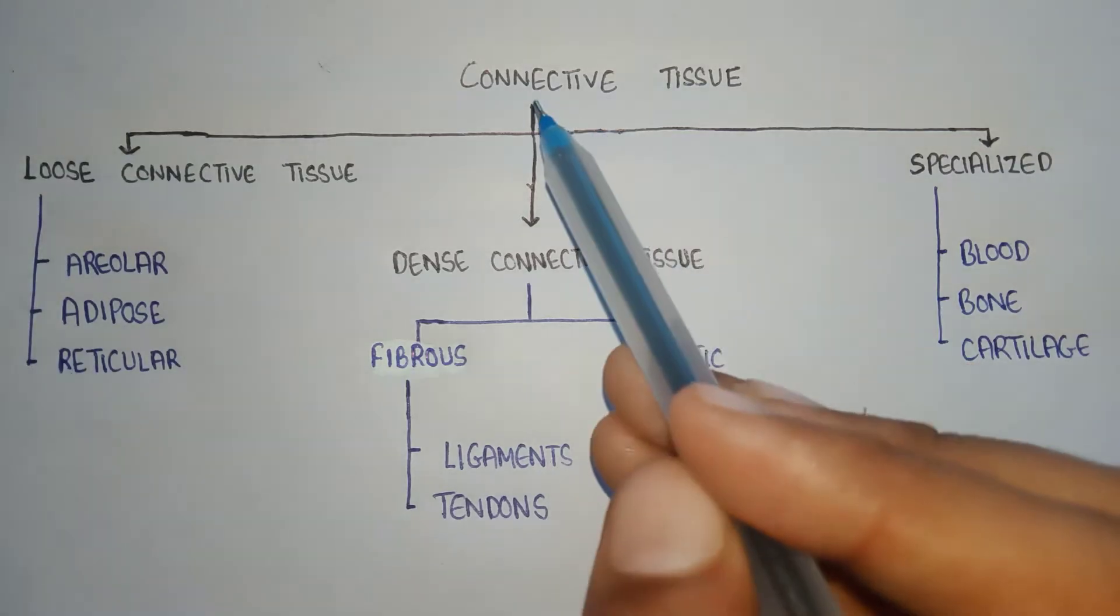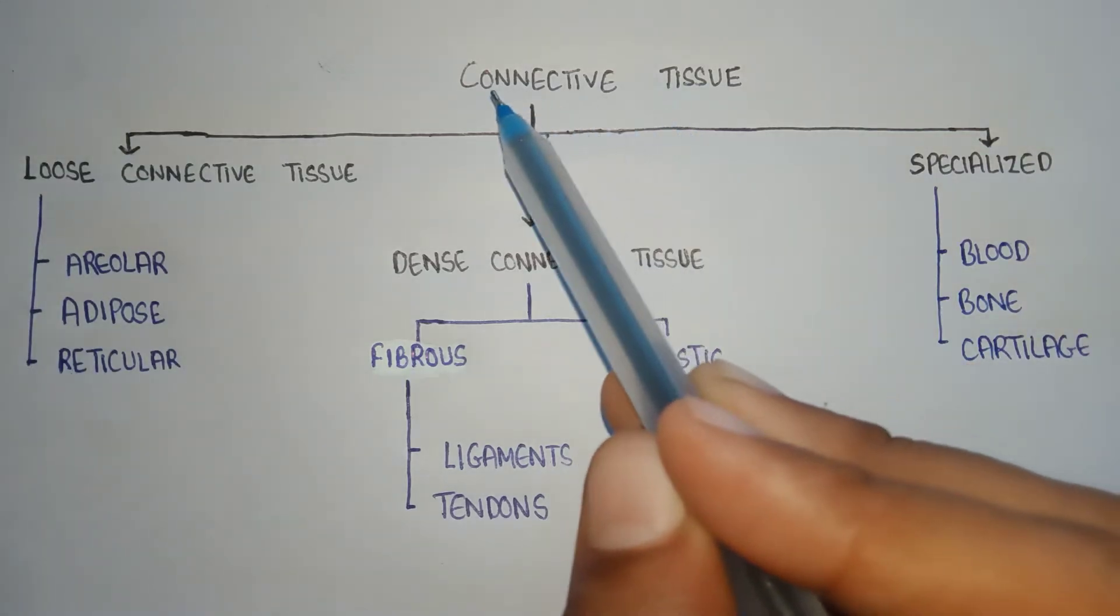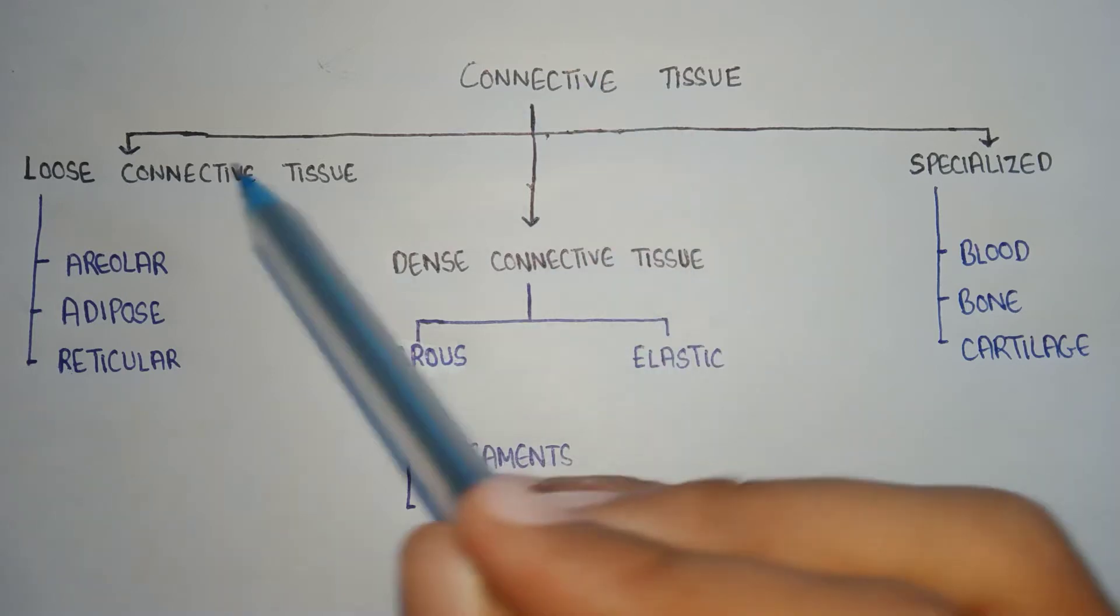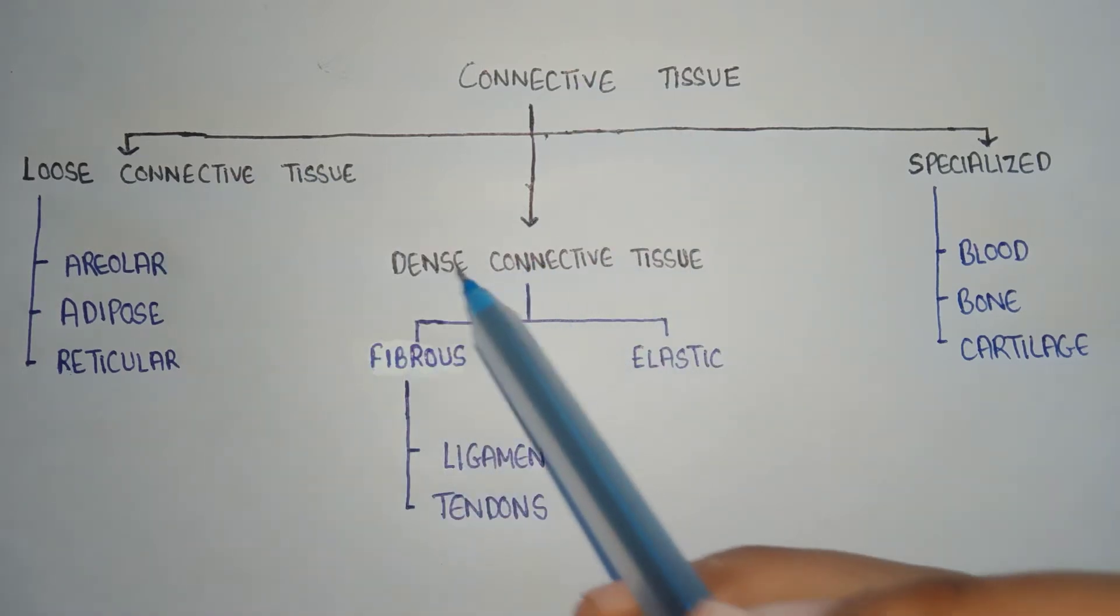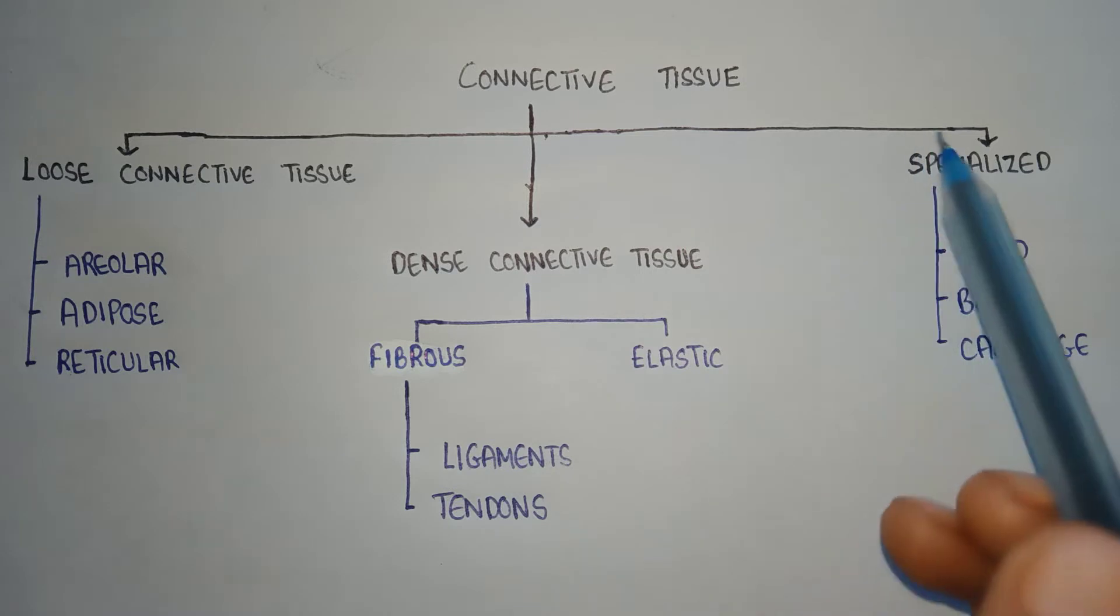Classification of connective tissues. Connective tissues are divided into three classes. First is loose connective tissue, second is dense connective tissue, and third is specialized connective tissue.